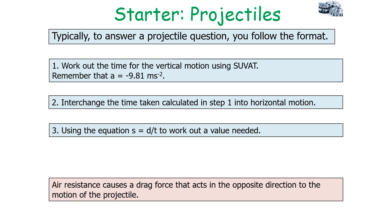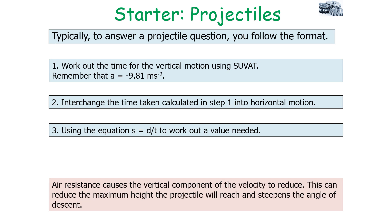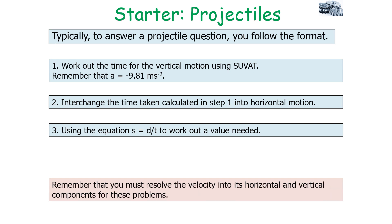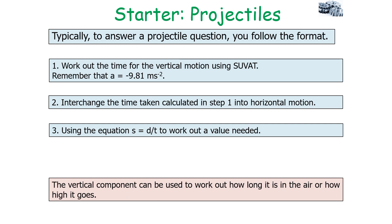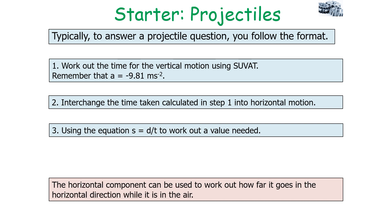Air resistance causes a drag force acting in the opposite direction to the motion of the projectile. It will reduce the horizontal speed and horizontal range of a projectile, and will also reduce the vertical component of velocity. This reduces the maximum height the projectile reaches and steepens the angle of descent. For any projectile equation, you must resolve the initial velocity into its horizontal and vertical components. The vertical component determines time in the air and maximum height; the horizontal component determines how far the projectile travels horizontally.